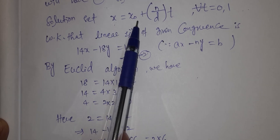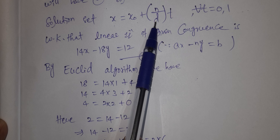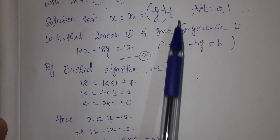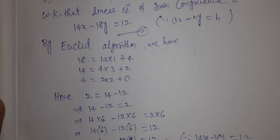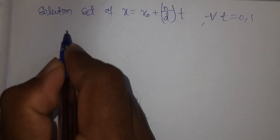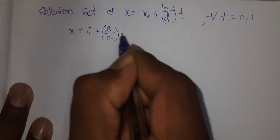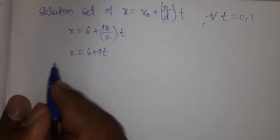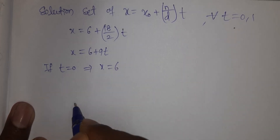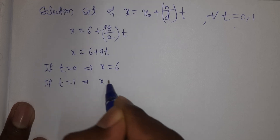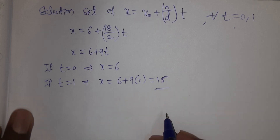Now the solution set: x = x₀ + (18/2)·t = 6 + 9t. If t = 0, x = 6. If t = 1, x = 6 + 9·1 = 15. This is the solution of the linear congruence.